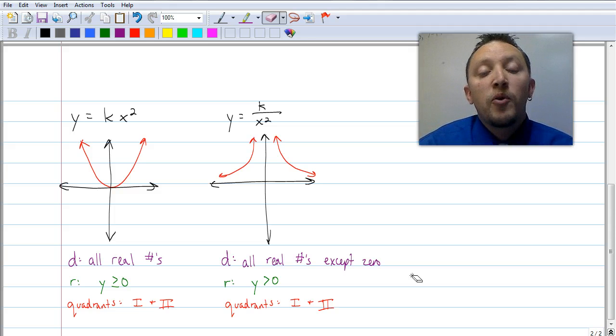So that's why with both those graphs, zero is such an important number because it can't exist. It can't be a part of the domain in k divided by x or k divided by x squared.